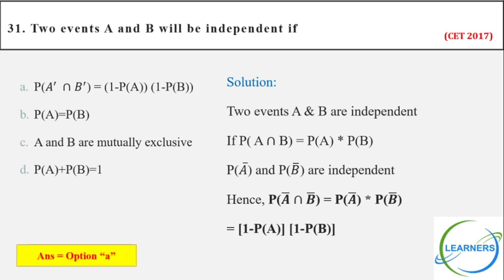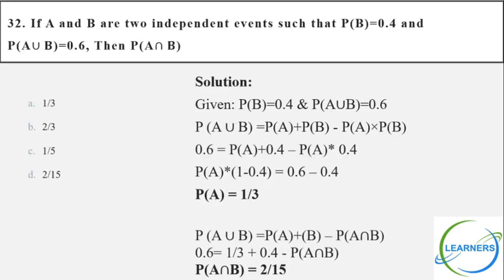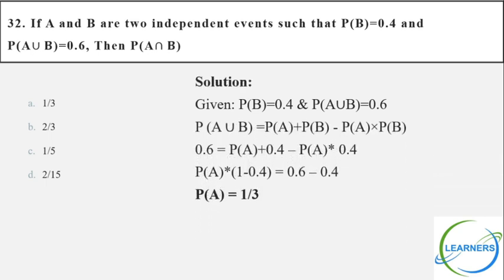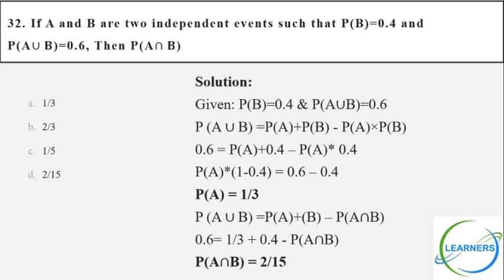Based on this concept we have two more questions. If A and B are two independent events such that P(B) = 0.4 and P(A∪B) is given, use the addition rule. Substitute P(A∪B) and P(A∩B); you will get everything in terms of P(A) = 1/3. Once you have P(A), calculate P(A∩B). Answer is option B.